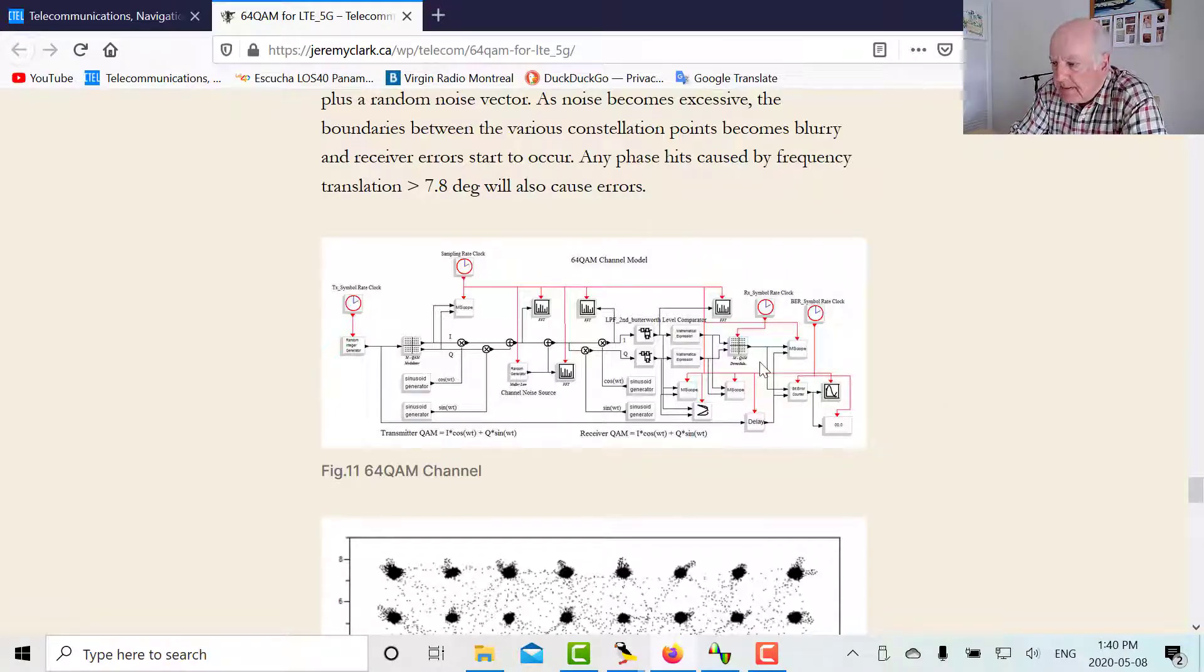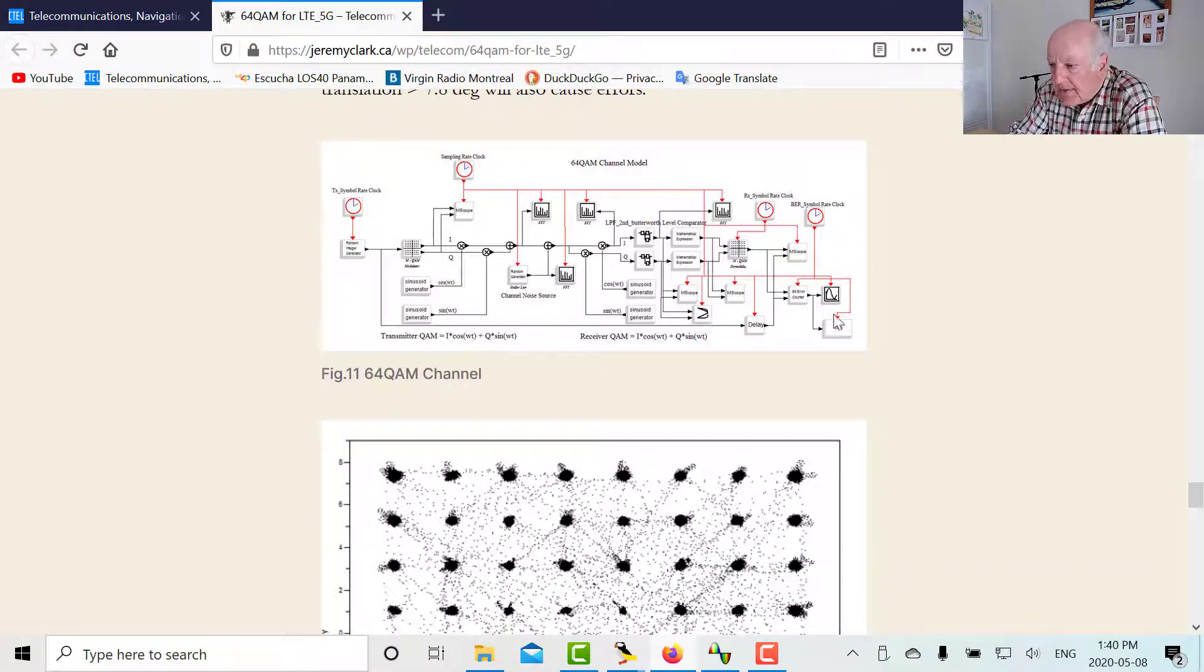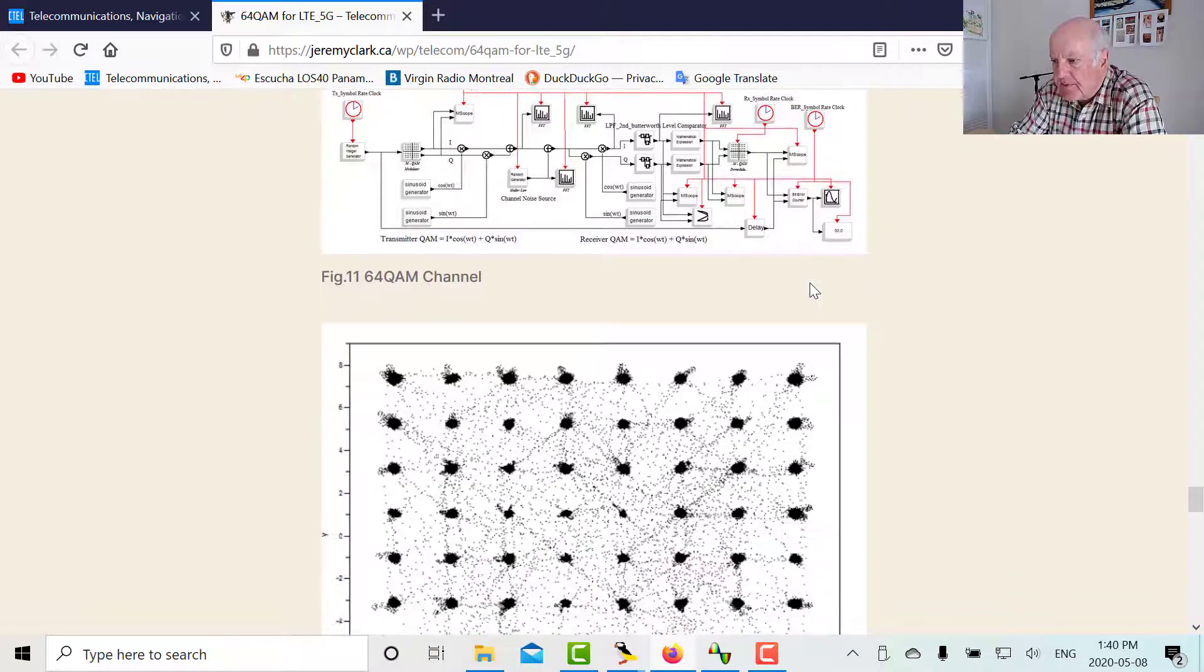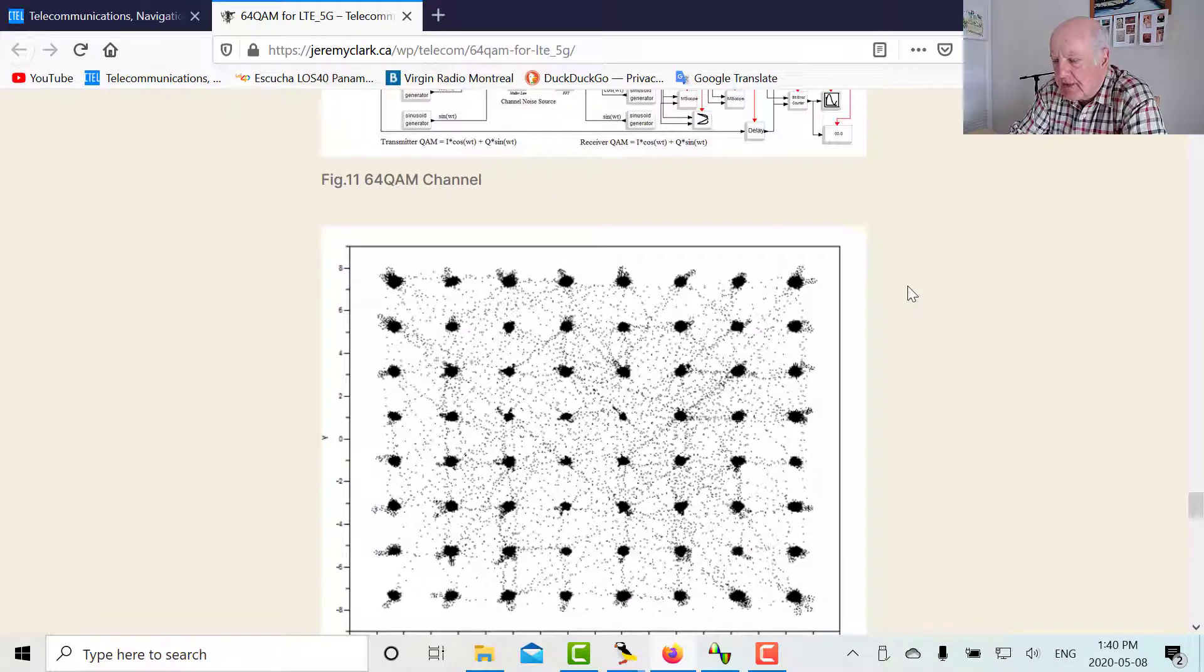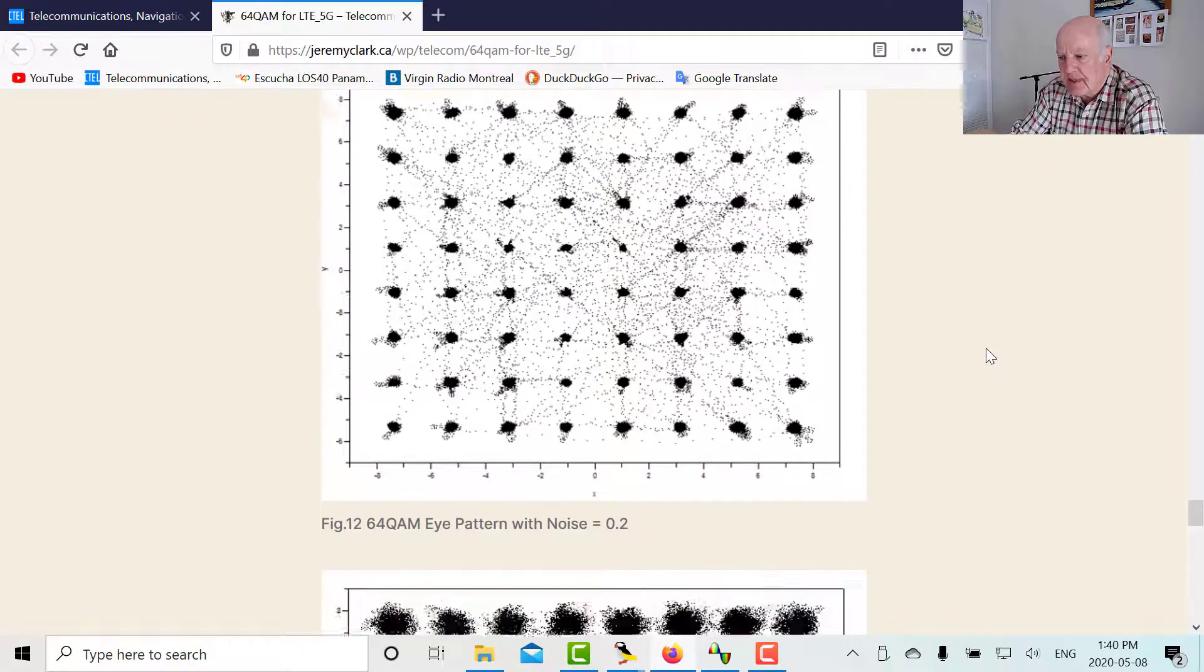So in the receiver, as you increase the noise here, there's the noise source. As I increase the noise source, what happens is when you look at the eye diagram, the eye diagram looks at the tip of the received vector. So if you imagine I and Q added together to give you a composite vector, it's looking at the tip here. So this represents kind of the noise on the tip. So as you add more noise, what happens is the tip starts to fill out like that.